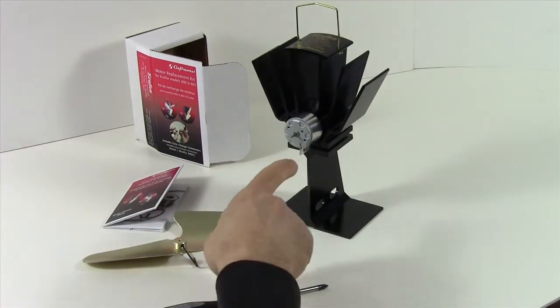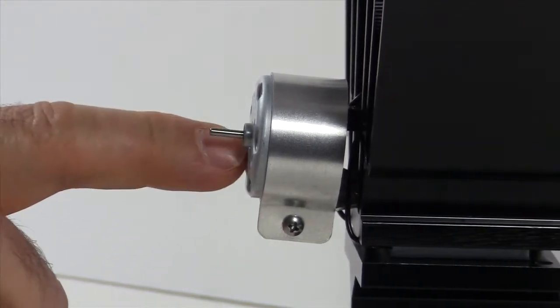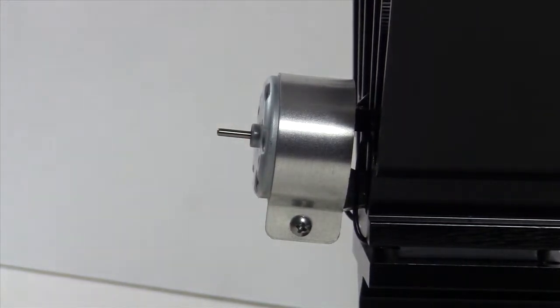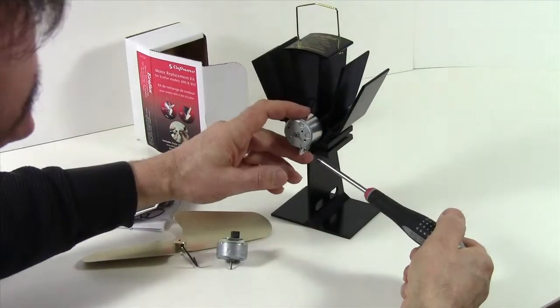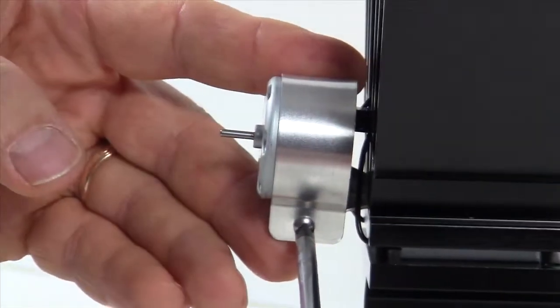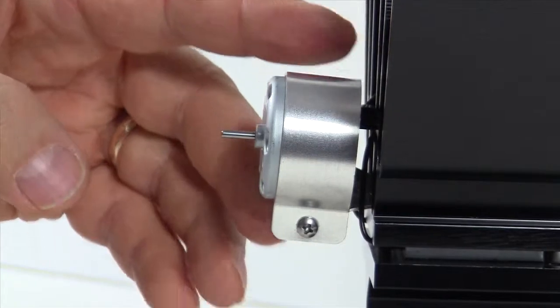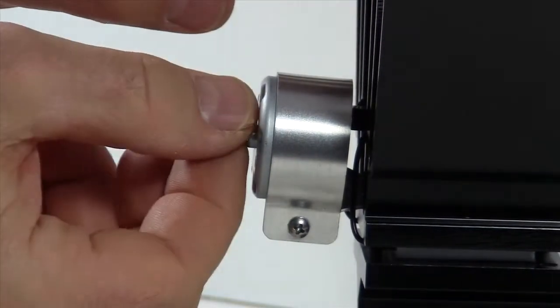Next, we have to loosen the screw on the motor bracket, which holds the motor in place. We're going to use our Phillips screwdriver and loosen the screw. Now simply slide our motor out.